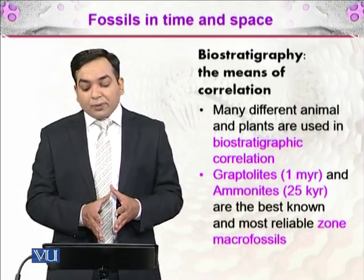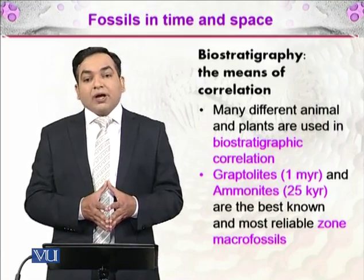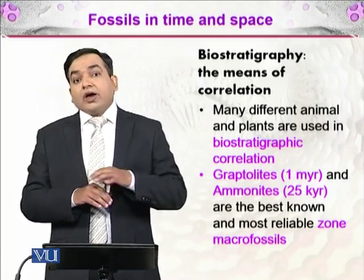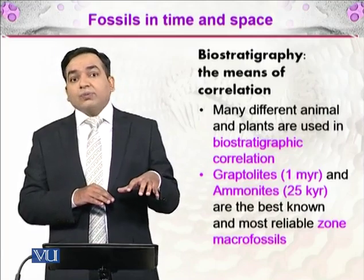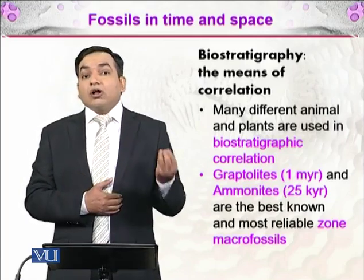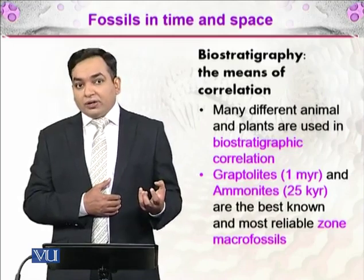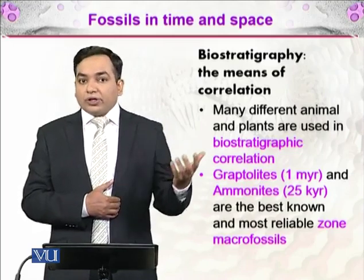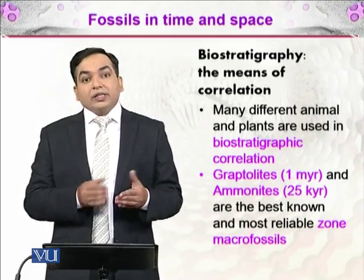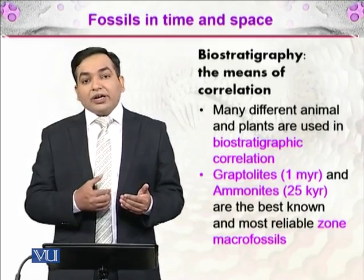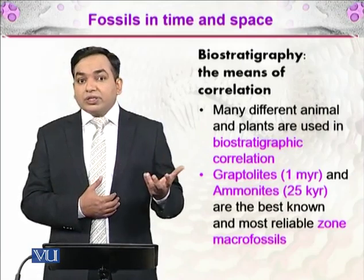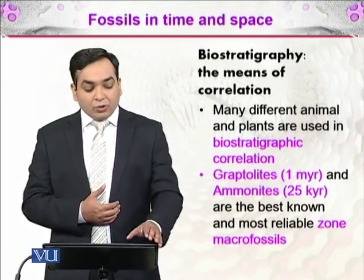These are the best reliable zone macrofossils. All the other fossils found alongside these fossils can also be aged accordingly. So if another organism is found along with a graptolite, and graptolites are 1 million years old, then that other fossil is also 1 million years old.